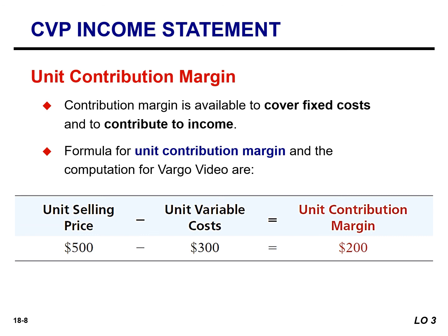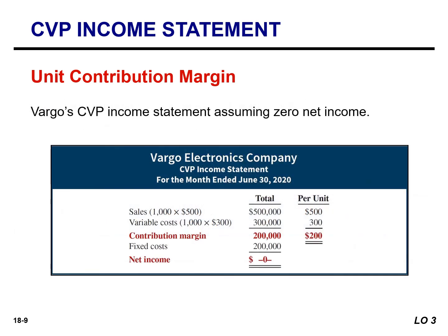The formula for unit contribution margin is: selling price minus variable cost equals unit contribution margin — in this instance, $200. This indicates that for every cell phone sold, the selling price exceeds the variable cost by $200, generating $200 per unit to cover fixed costs and contribute to net income. Because Vargo has fixed costs of $200,000 and generates $200 per unit, it must sell 1,000 units to cover its fixed costs. When contribution margin equals fixed cost, Vargo reports net income of zero — this is the break-even point, where total cost (variable plus fixed) equals total revenue.